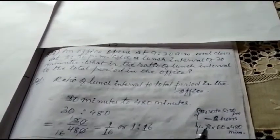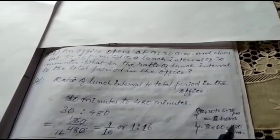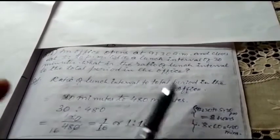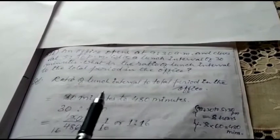As I said, both the units should be in the same—both the time should be in the same unit. 30 minutes and 480 minutes means eight hours.